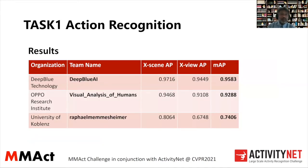Here are the final results. The top three teams are shown. First place is Deep Blue Technology with MAP 0.95. Second place is OPPO Research Institute with MAP 0.92. Third place is University Copeland with MAP 0.94. Let's move on to task two.